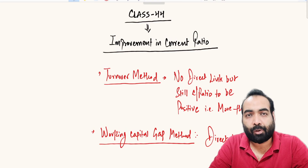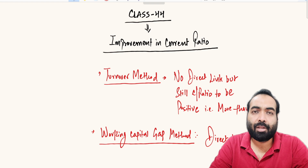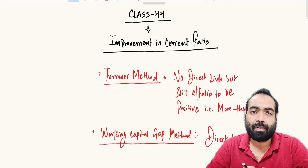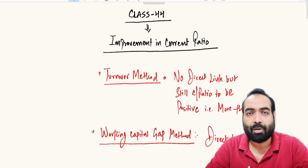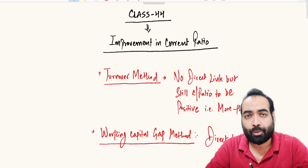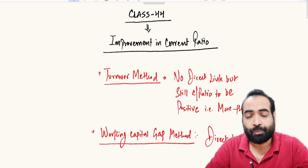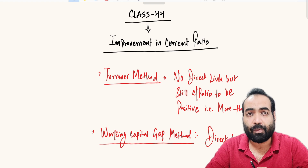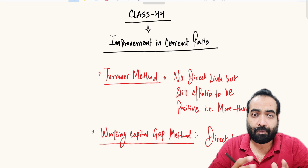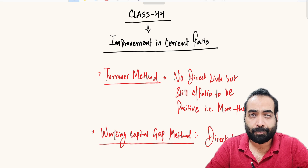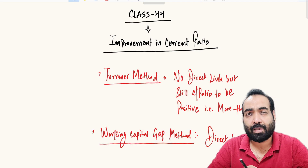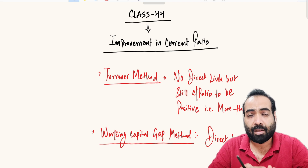Welcome back friends to class number 44. In the previous video we discussed the working capital gap method of MPBF norms. I haven't explained one topic yet — the improvement of current ratio, which is of utmost importance when calculating the working capital eligibility of the borrower, whether it is the turnover method, MPBF1, MPBF2, or drawing power.